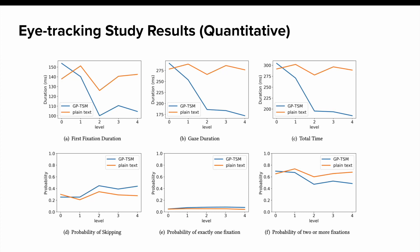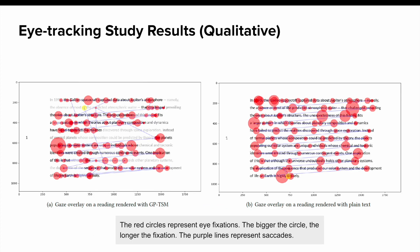We also plotted participants' eye movements overlaid on the GPTSM rendering of text, such as the figures shown here. By going through each of these figures using a grounded theory approach, we found that in the GPTSM interface, gaze is more concentrated around the darker text segments.